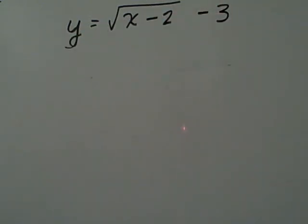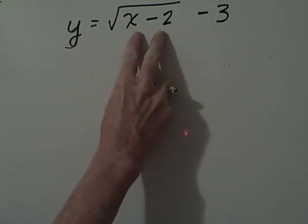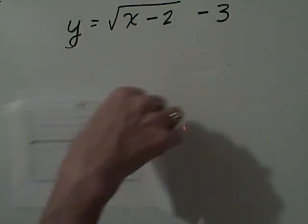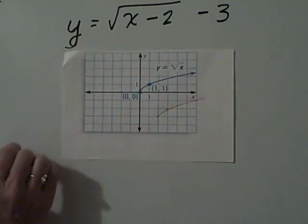What do you think this means about our graph? This tells us it's going to shift two units to the positive section, so to the right, and down three units. This is what the graph of this equation looks like.